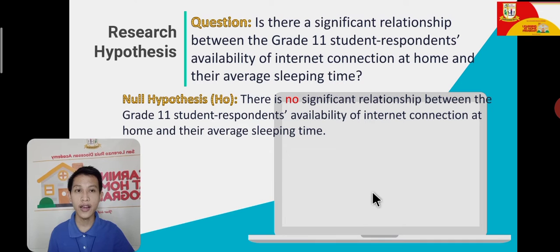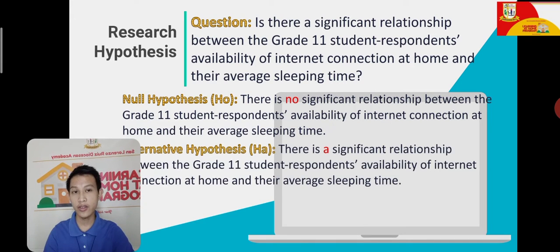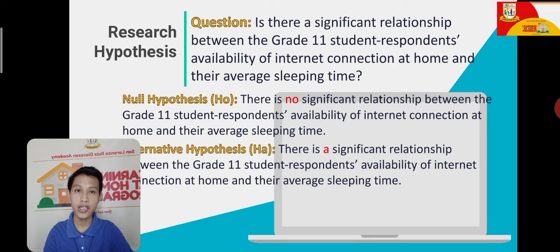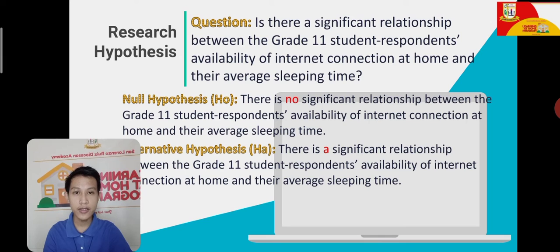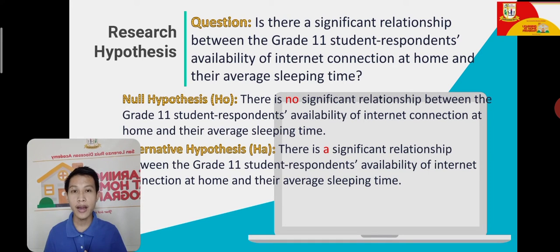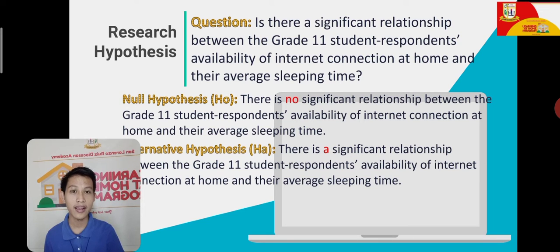For H-sub-A, the alternative hypothesis, you simply change 'no' to state that there is a relationship: There is a significant relationship between the Grade 11 student respondents' availability of internet connection at home and their average sleeping time. The alternative hypothesis contradicts the null hypothesis, predicting that there is a relationship between having internet connection at home and the sleeping time of Grade 11 students.